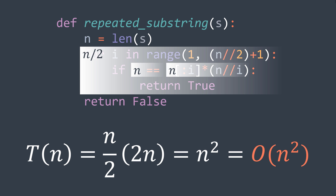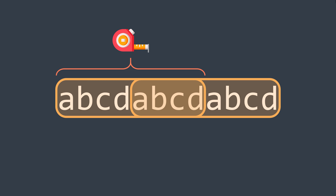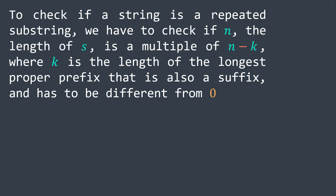The second solution is based on finding the length of the longest proper prefix that is also a suffix. A proper prefix of s is a string that s starts with, and that is different from s itself. To check if a string is a repeated substring, we check if n (the length of s) is a multiple of n minus k, where k is the length of the longest proper prefix that is also a suffix, and k must be different from zero.